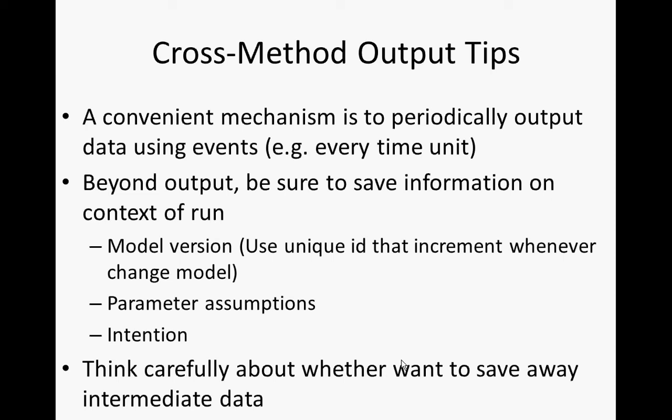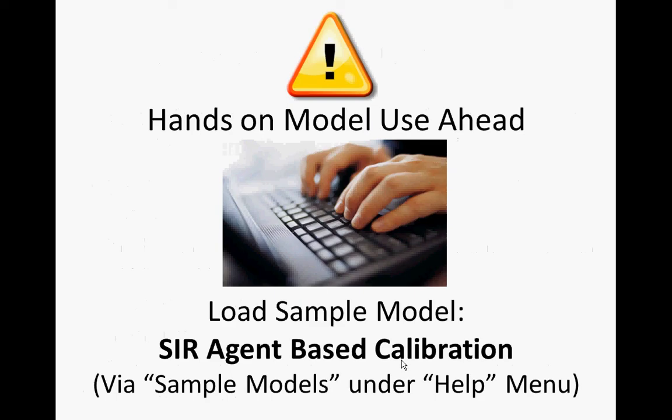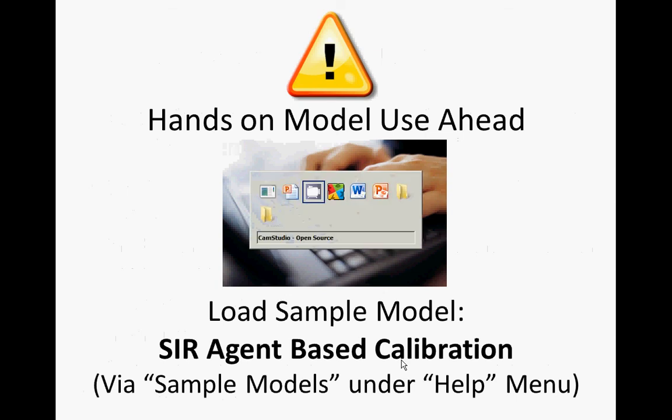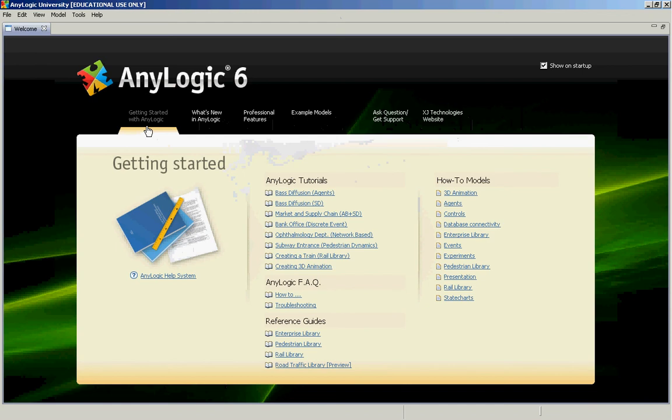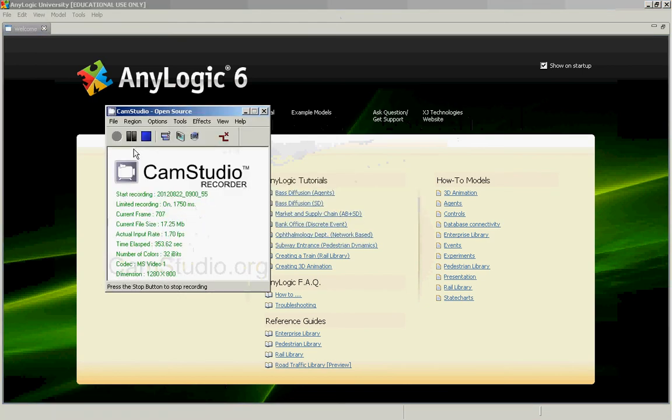If we have time in this class, we'll talk about a system we've built up that works with AnyLogic to do exactly this, called SILVER. What I'd like you to do now is load in a model that we're going to be becoming familiar with today, and that's the SIR agent-based model — it should be under sample models within the help menu. Let's go.